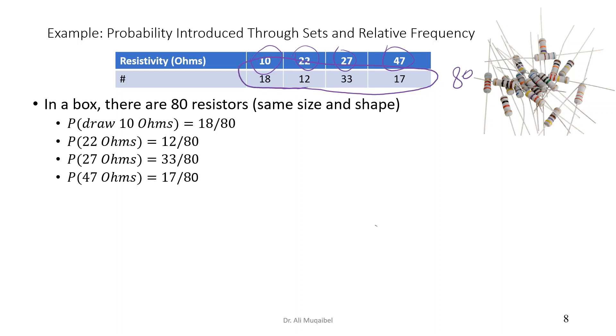And if somebody asks 'what's the probability of drawing a first resistance that is 10 ohm?' it becomes 18 divided by 80. And then we have for the 27 ohm it's 33 by 80, for the 47 ohms it's 17 by 80.